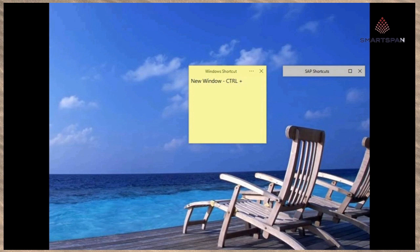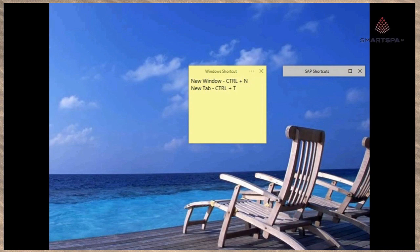If users want to remove some sticky notes, they simply point to the note button on the menu and then choose the delete option. To alter the size of a note, users must drag and pull it from the right bottom corner. Users can also set the color scheme to their own preferences by selecting color on the note menu icon.